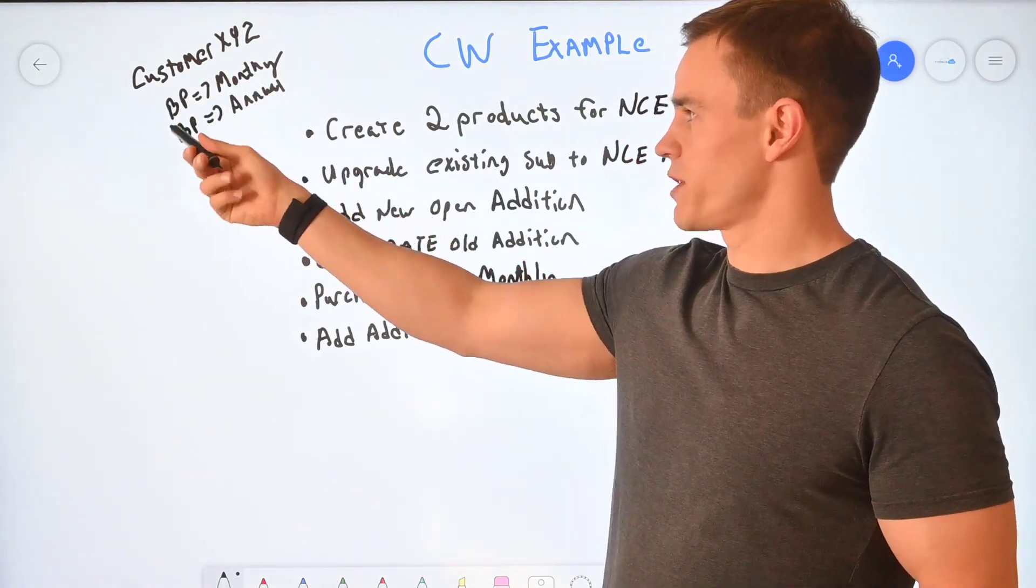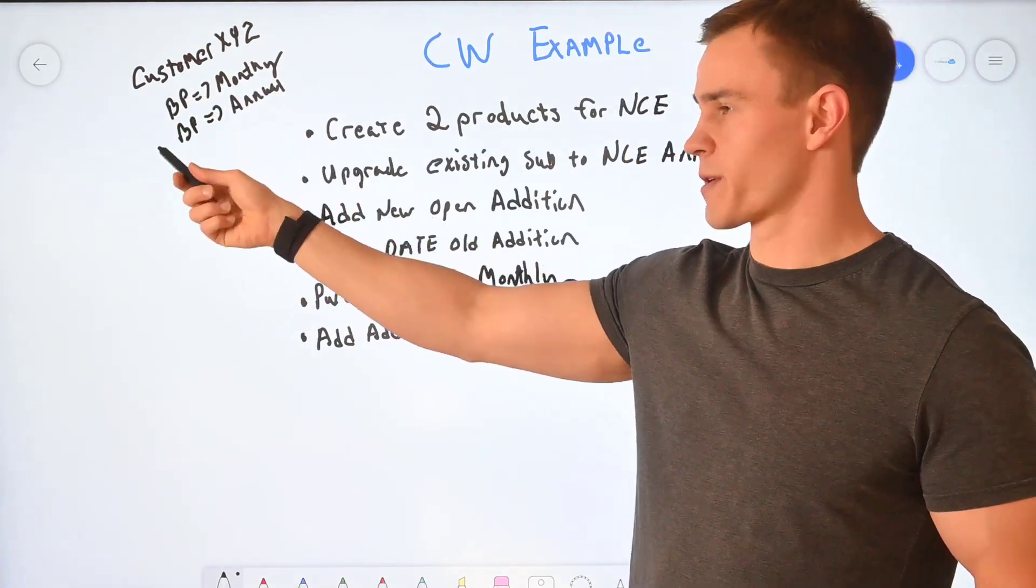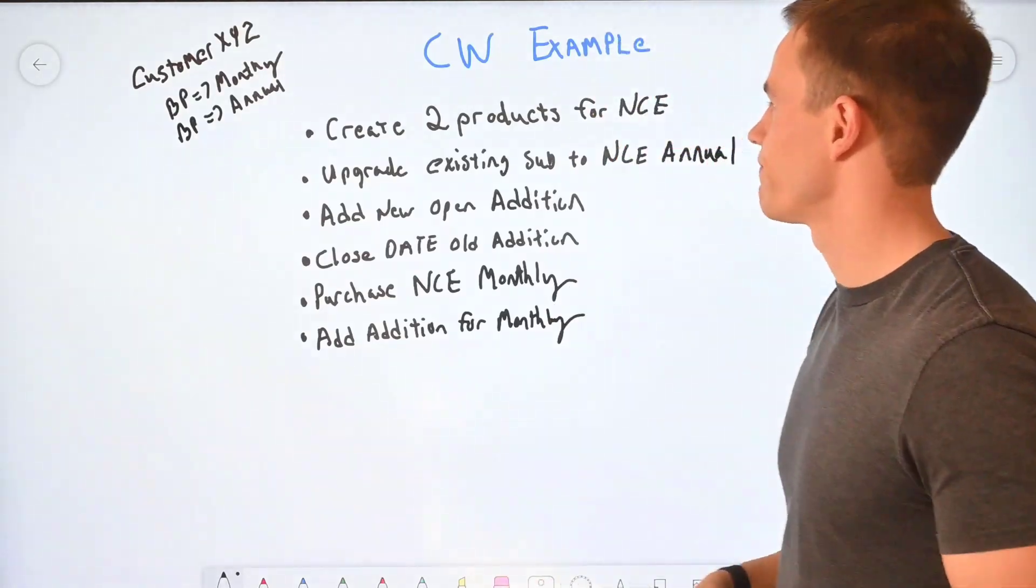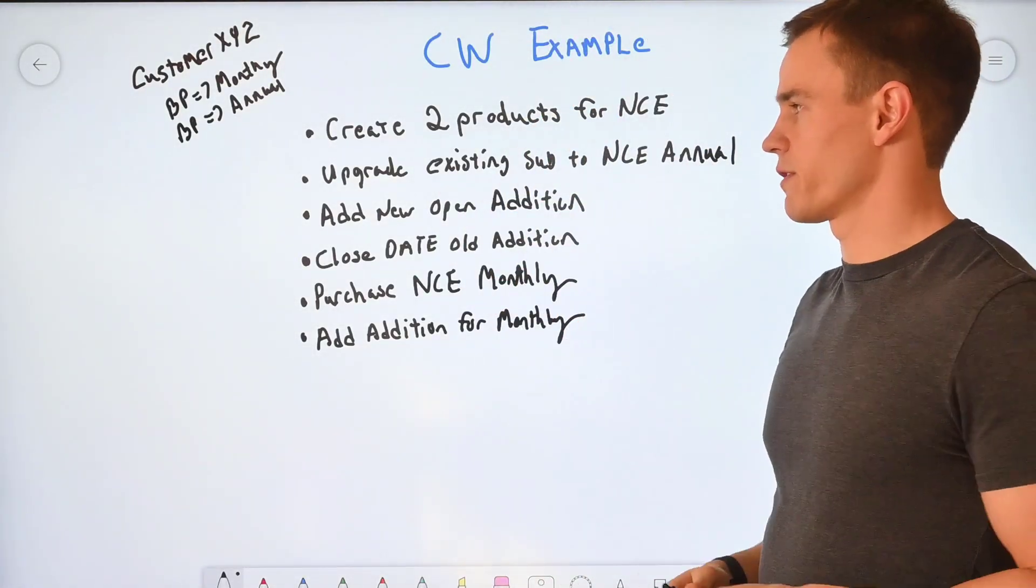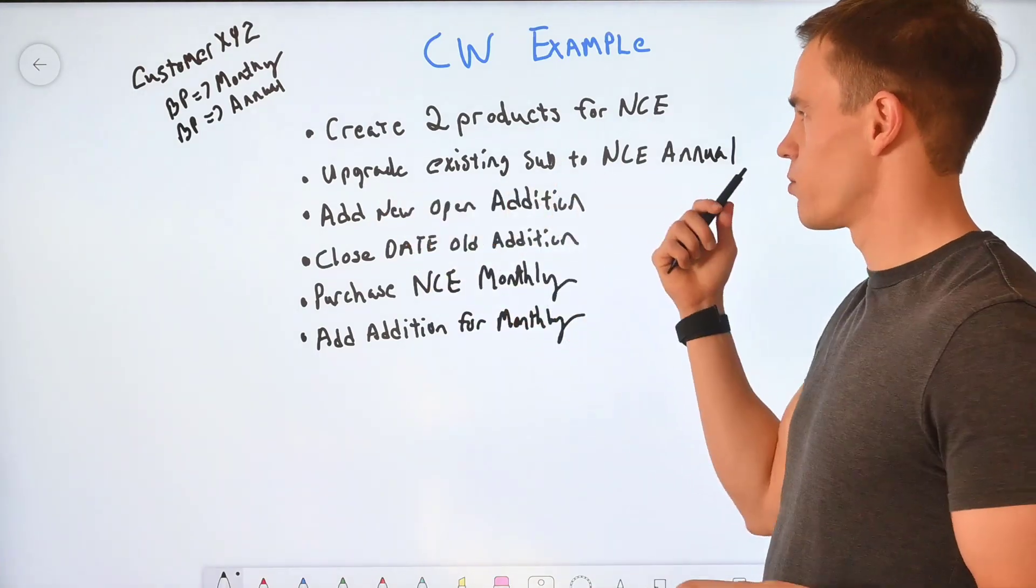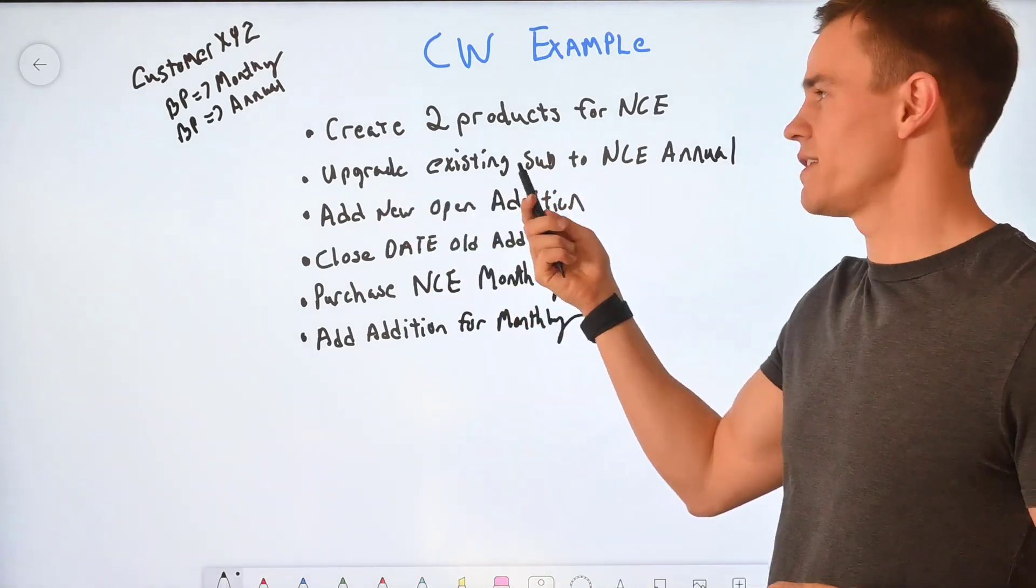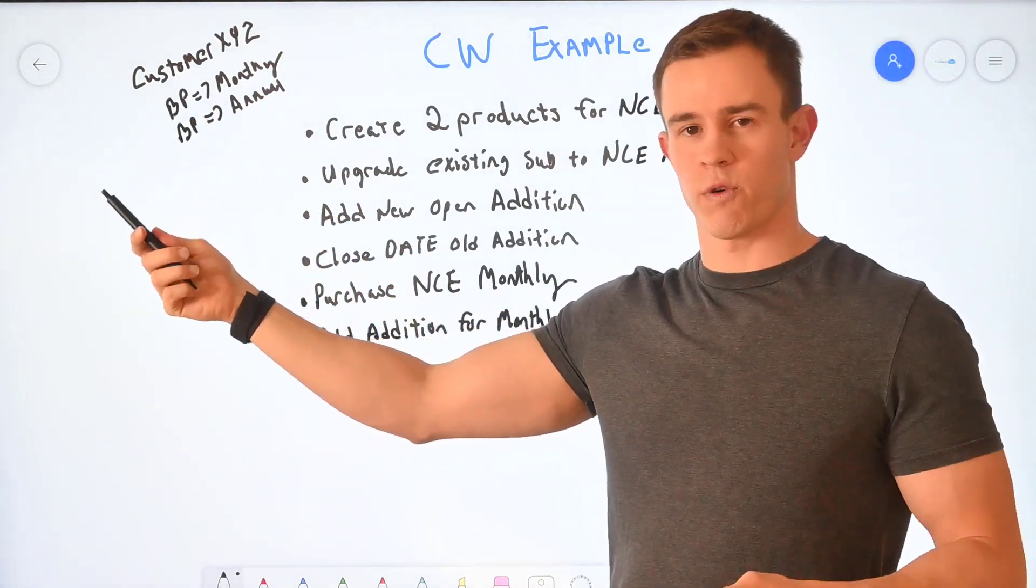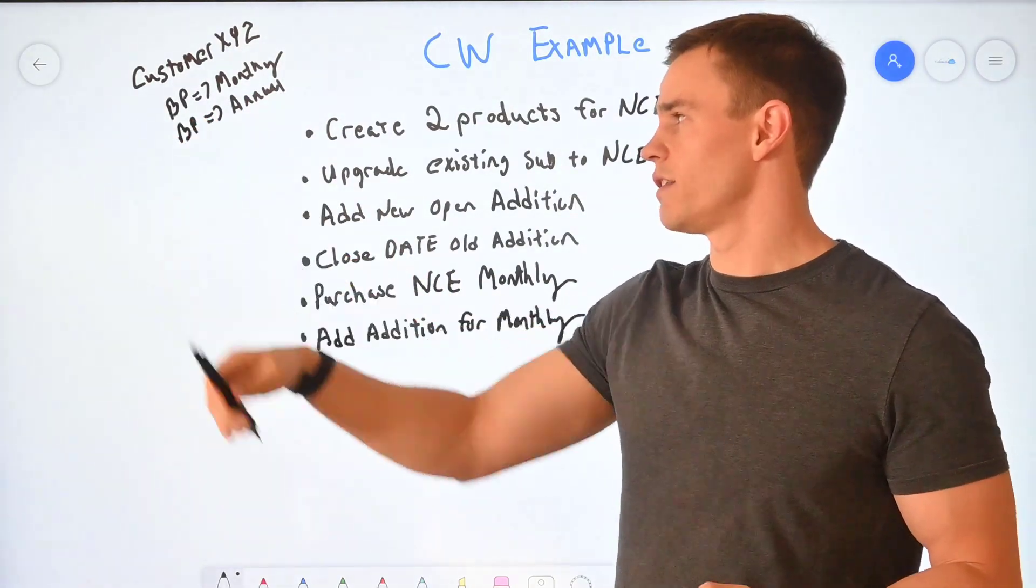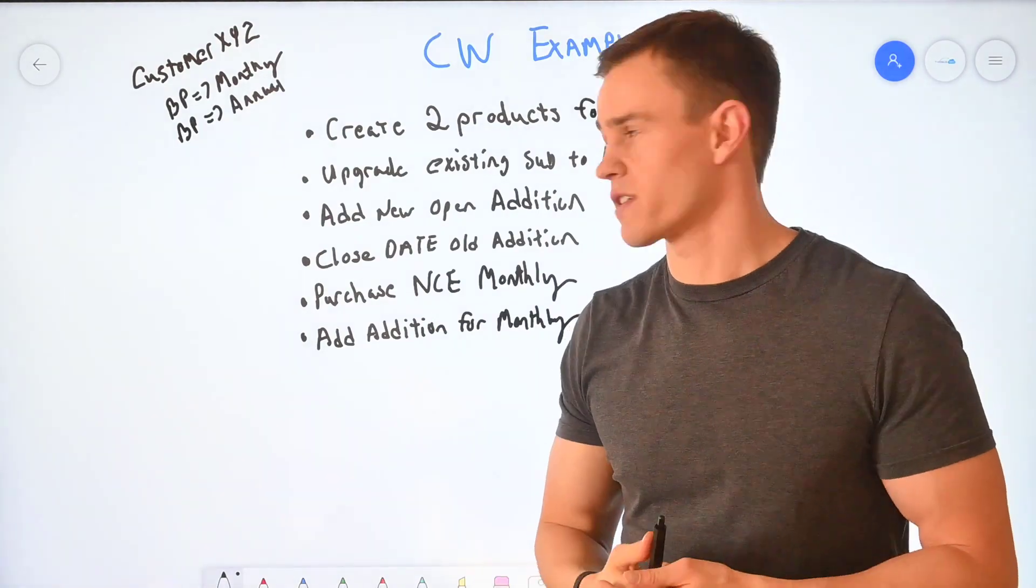So essentially we have this customer here, they're going to have those two separate subscriptions now instead of the single one. So your step-by-step walk through here for that particular customer would be to create two products for NCE if you don't have them already for the business premium monthly, bake it in with those 20% premiums and then the annuals you'll write as well as a separate product.